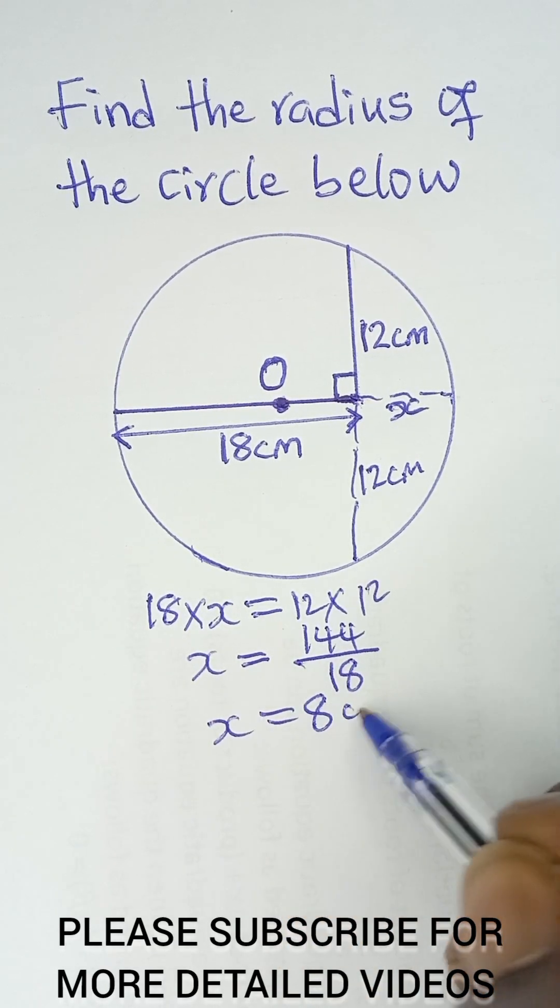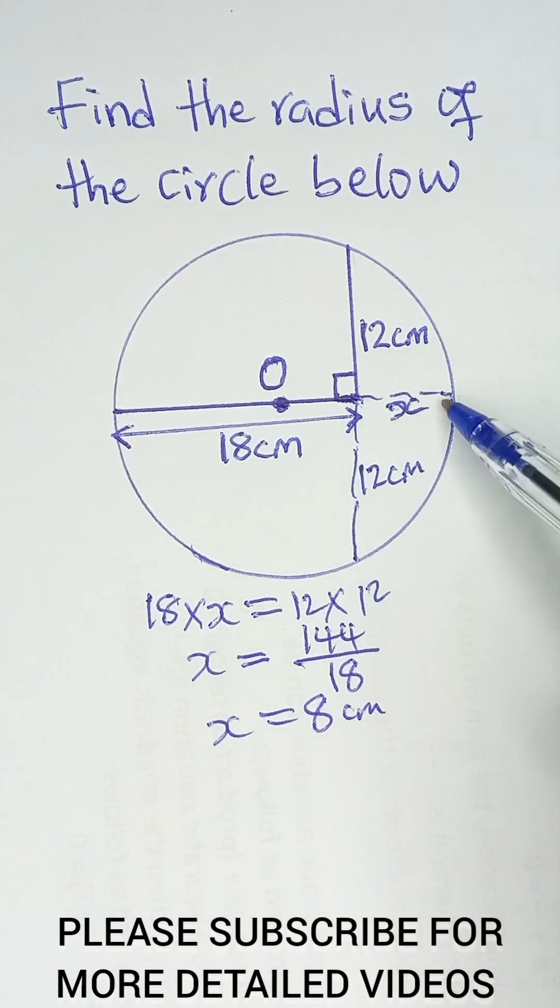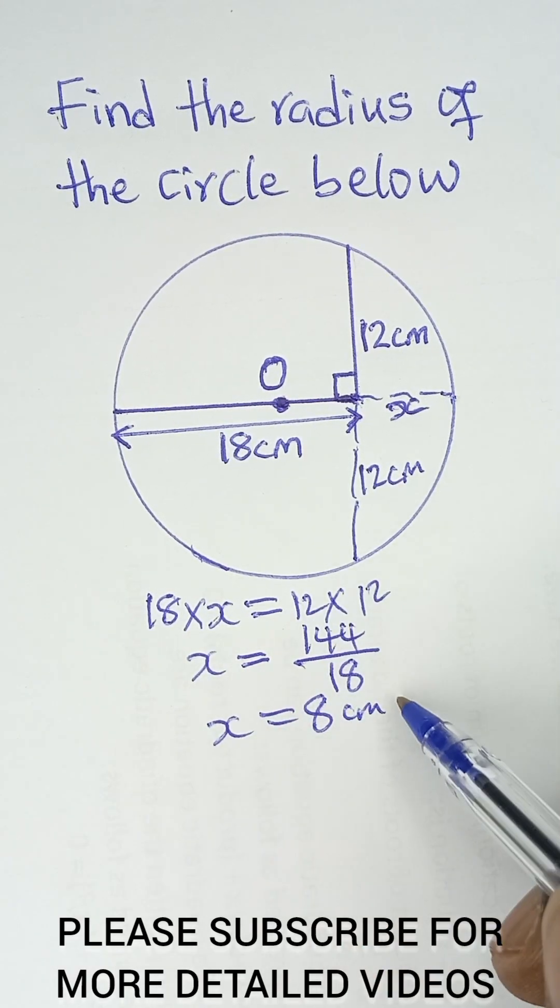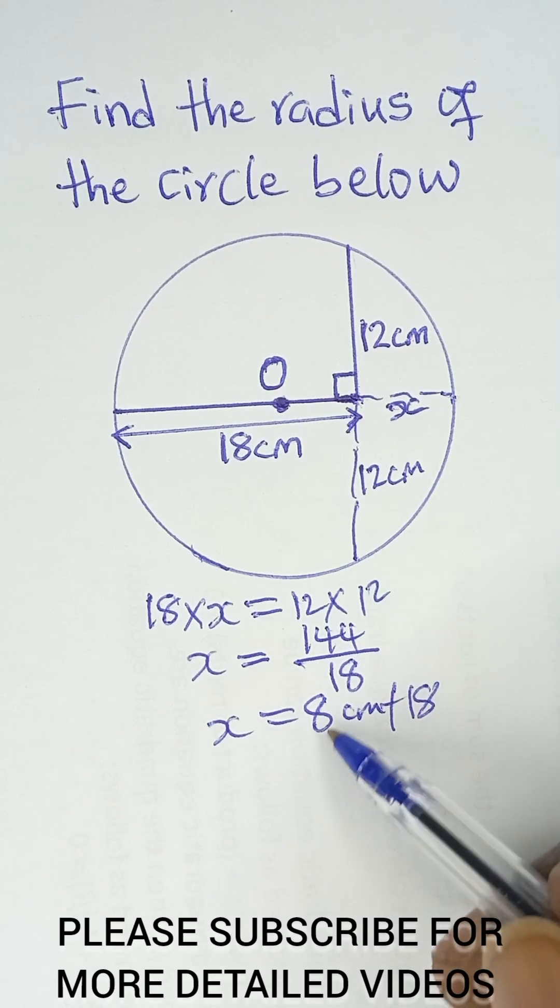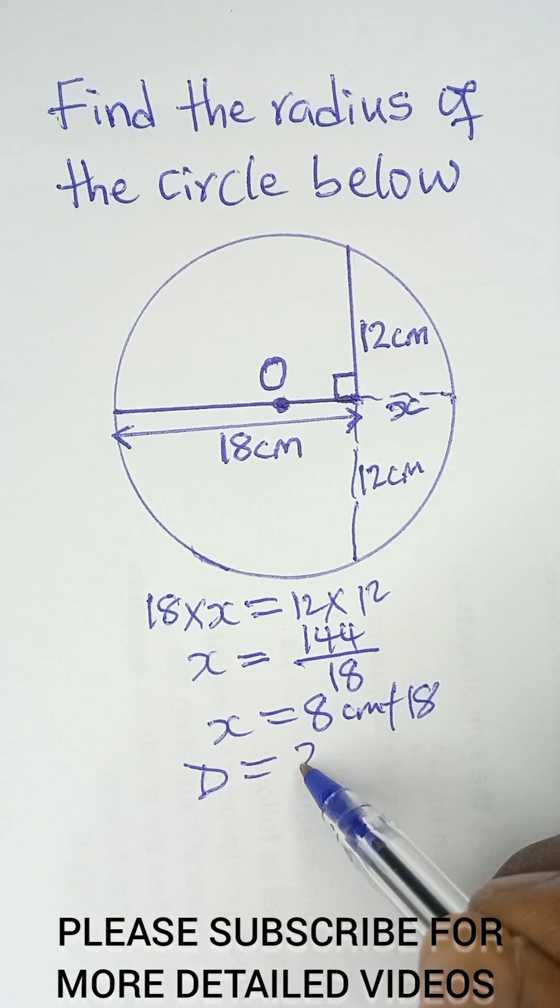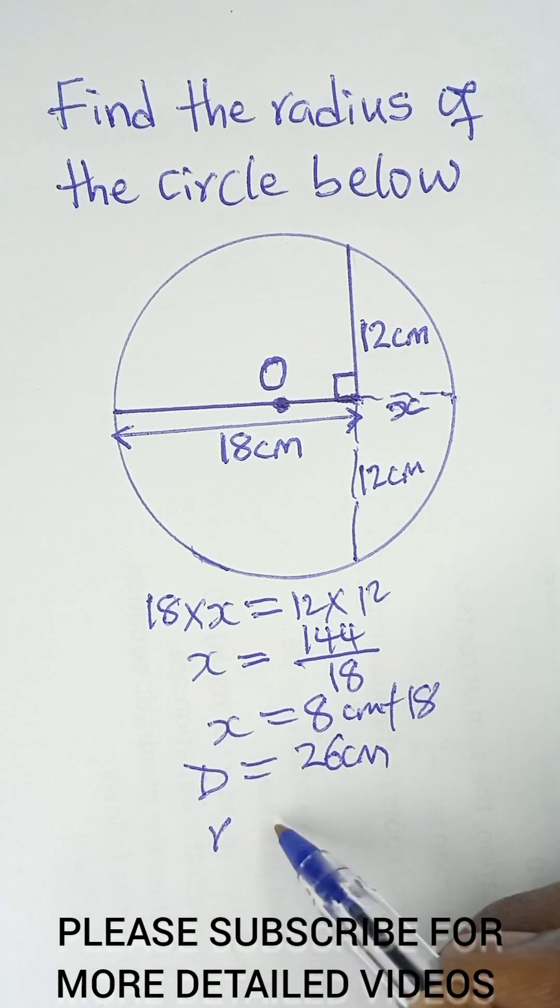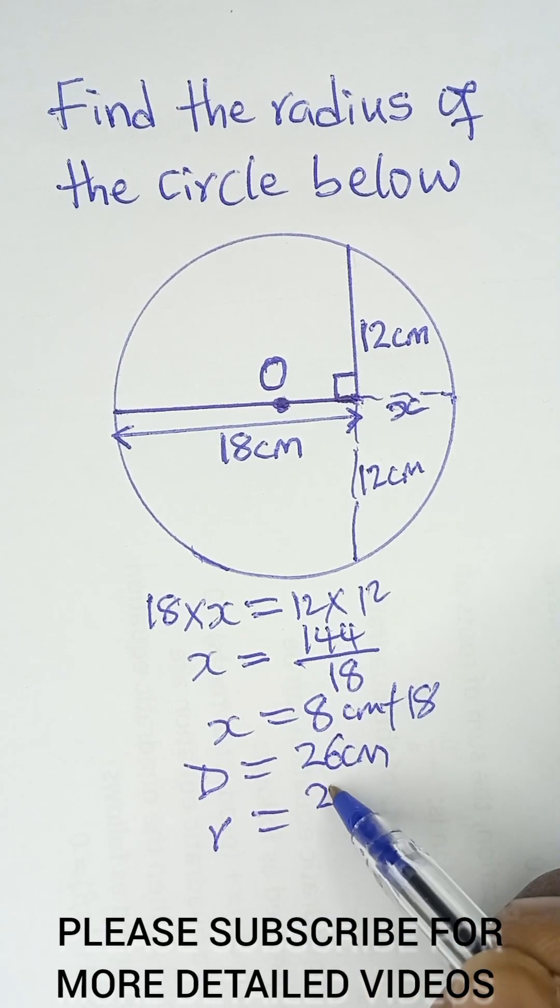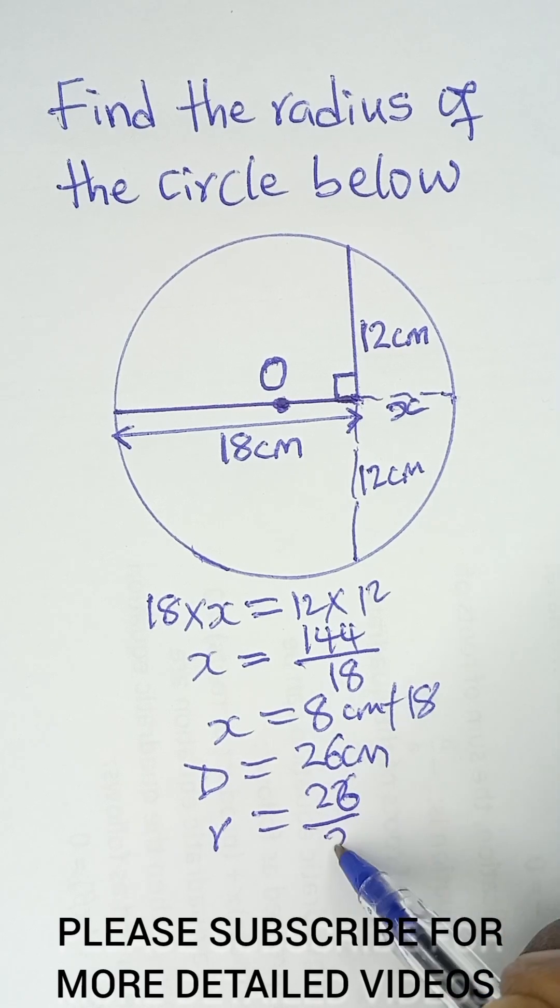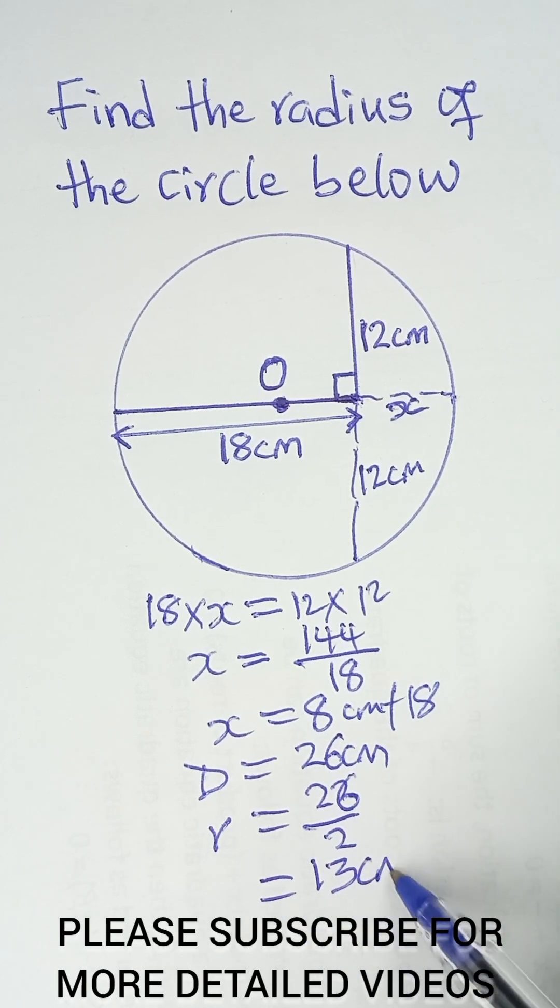So that means the diameter, which is 18 plus x, that is 18 plus 8, so the diameter d is equal to 26 centimeters. So the radius, which is half of the diameter, will be 26 over 2, and that will be equal to 13 centimeters as the final answer.